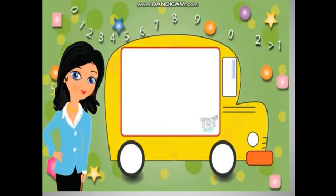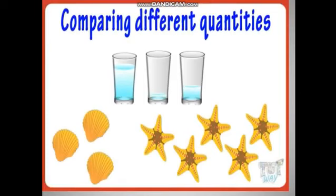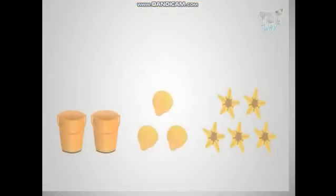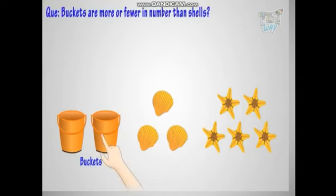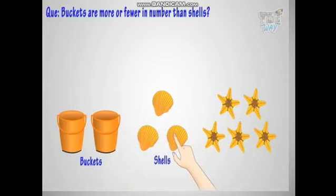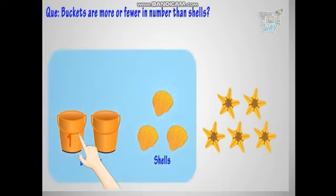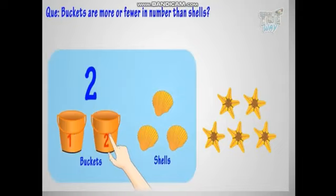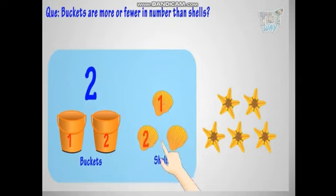Hi kids! Today, we will observe a few things and their quantities. Let's start. Now tell me, are buckets more or fewer in number than shells? Let's count. One, two — buckets are two. One, two, three — and shells are three.